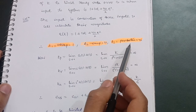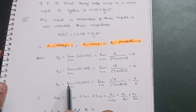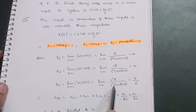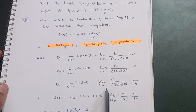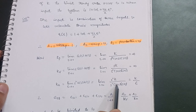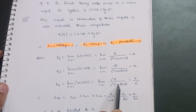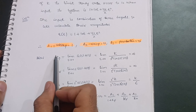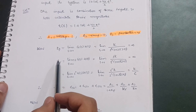The acceleration error constant: Ka = lim(s→0) s²·G(s)H(s) = lim(s→0) s² · k / [s²(s+2)(s+3)]. The s² terms cancel, leaving k / [(0+2)(0+3)] = k / (2×3) = k/6. So Ka = k/6.